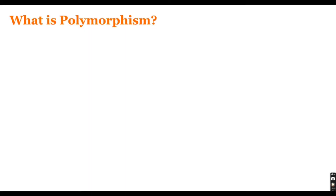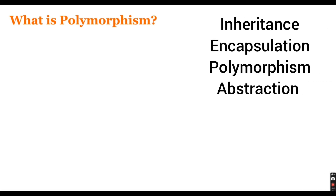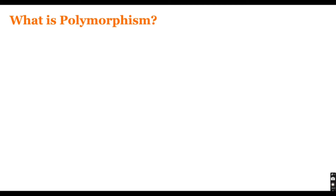Hello friends, welcome to CodeCrash Coding. In this video we are going to learn about polymorphism. We have already learned there are four important properties in object-oriented programming: inheritance, encapsulation, polymorphism, and abstraction. We have already covered the concepts of inheritance and encapsulation in a previous video.